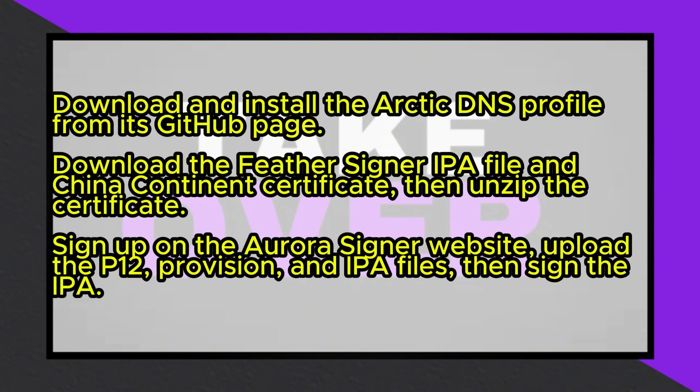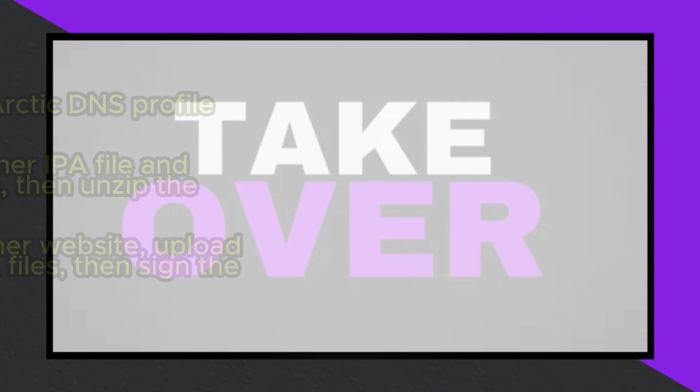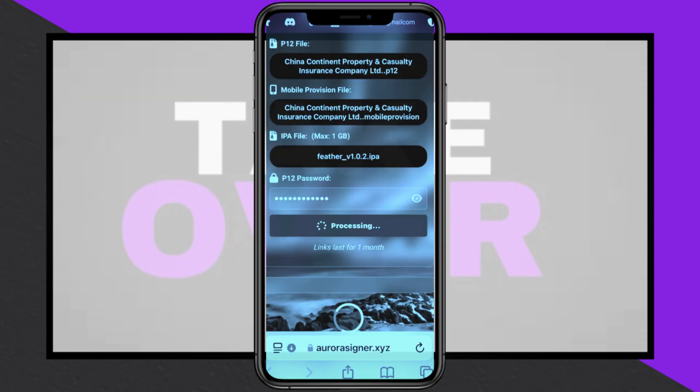Next, visit the FeatherSignal GitHub page, download the latest FeatherSignal IPA file, and save it. Then download the China Continent certificate as a zip file, unzip it, and locate the three extracted files.